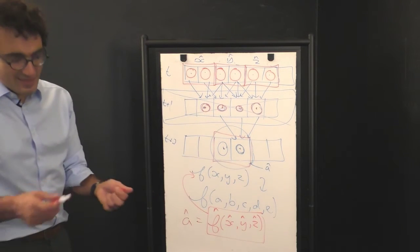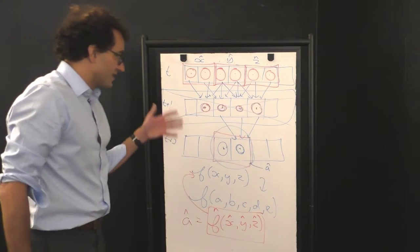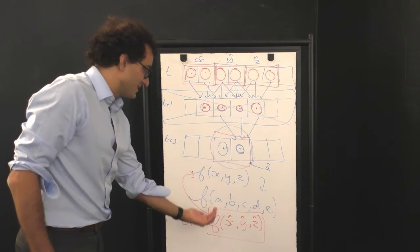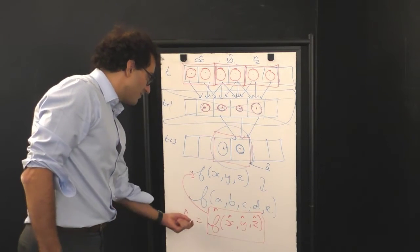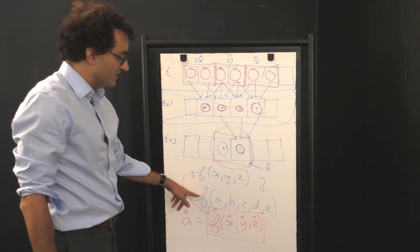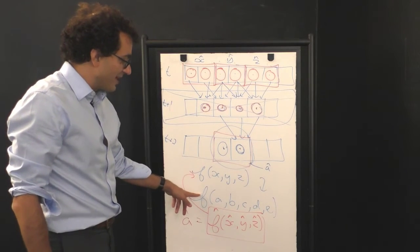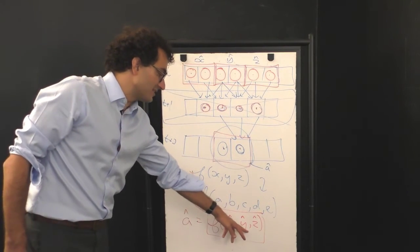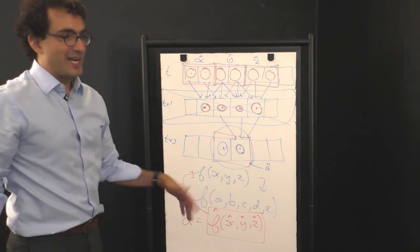So we're part of the way there to coarse graining the cellular automata, but we're only part of the way. We have a function that depends upon three arguments and spits out one. That's an improvement over what we wanted to do before where we had a function that takes in five arguments. The problem is that these arguments are now no longer binary variables.